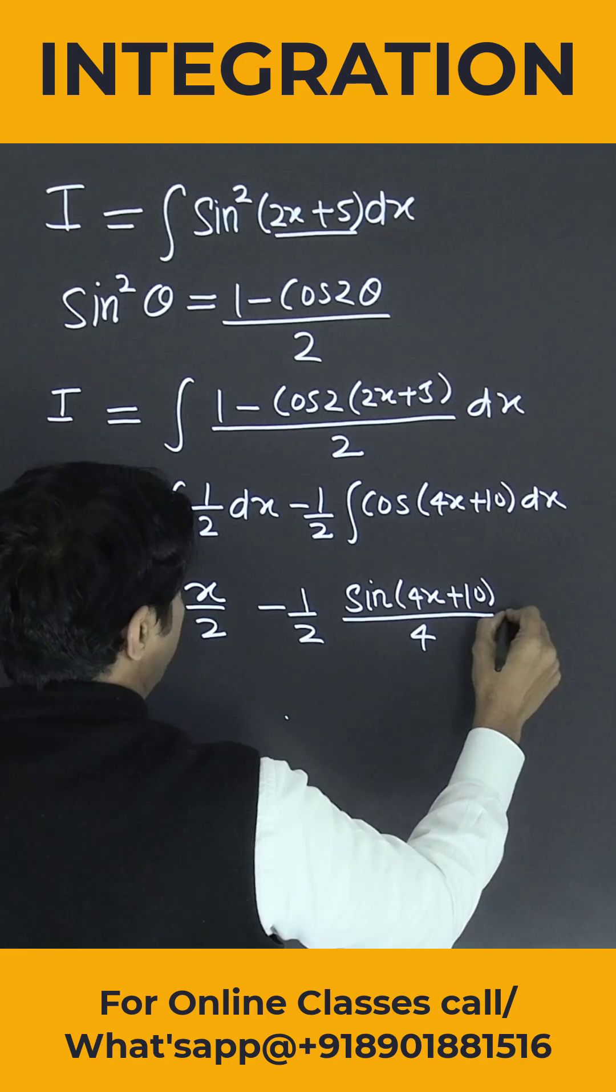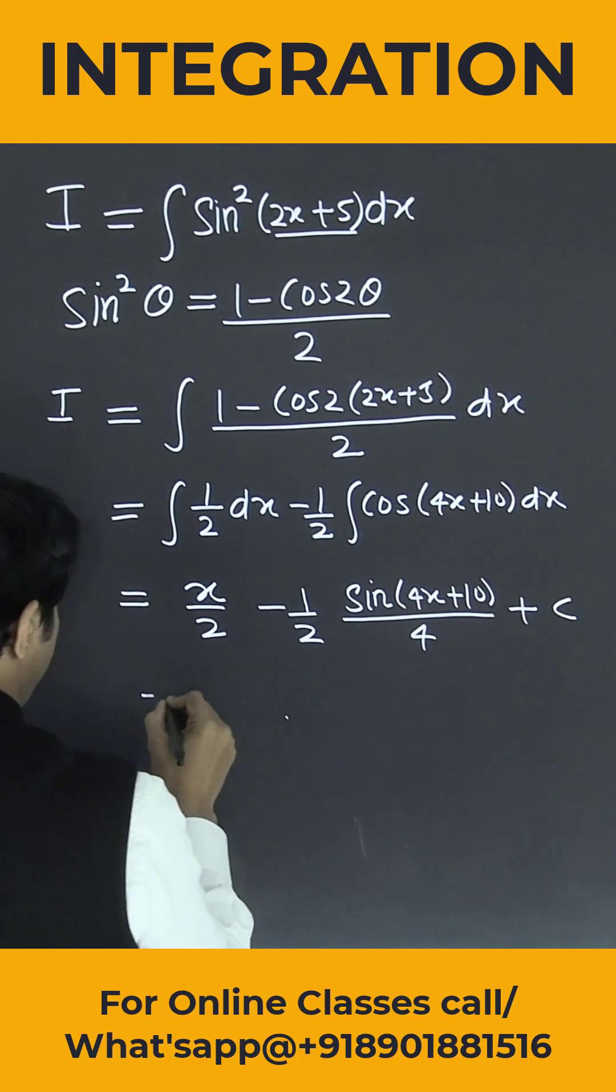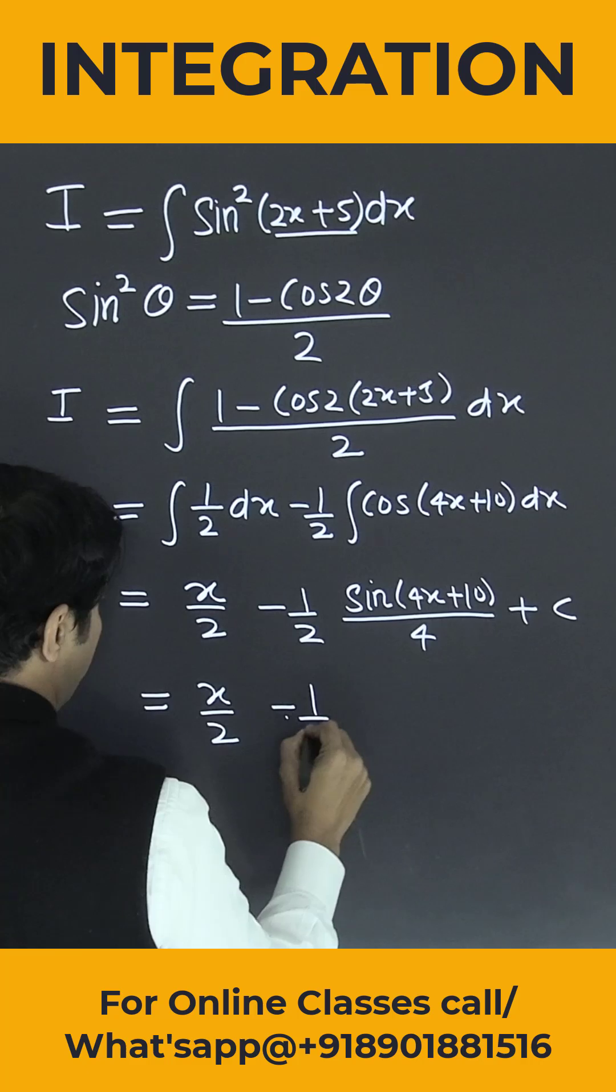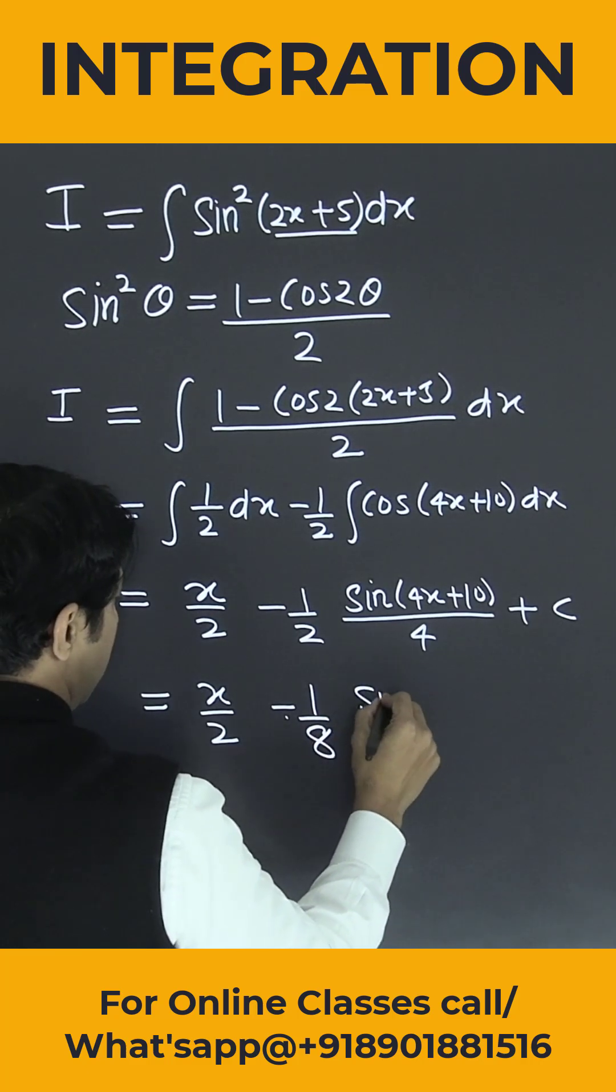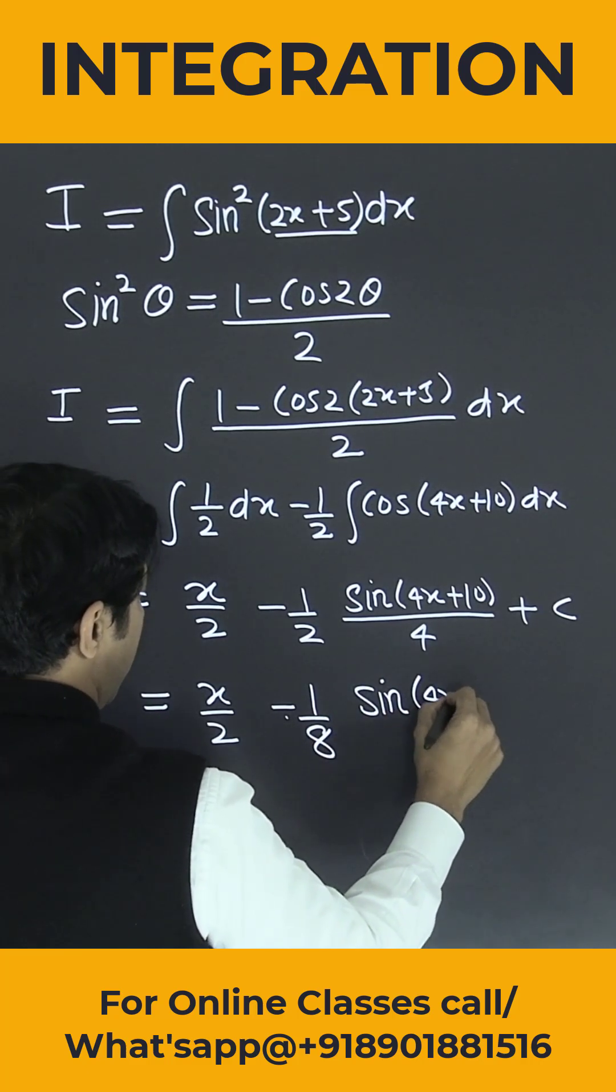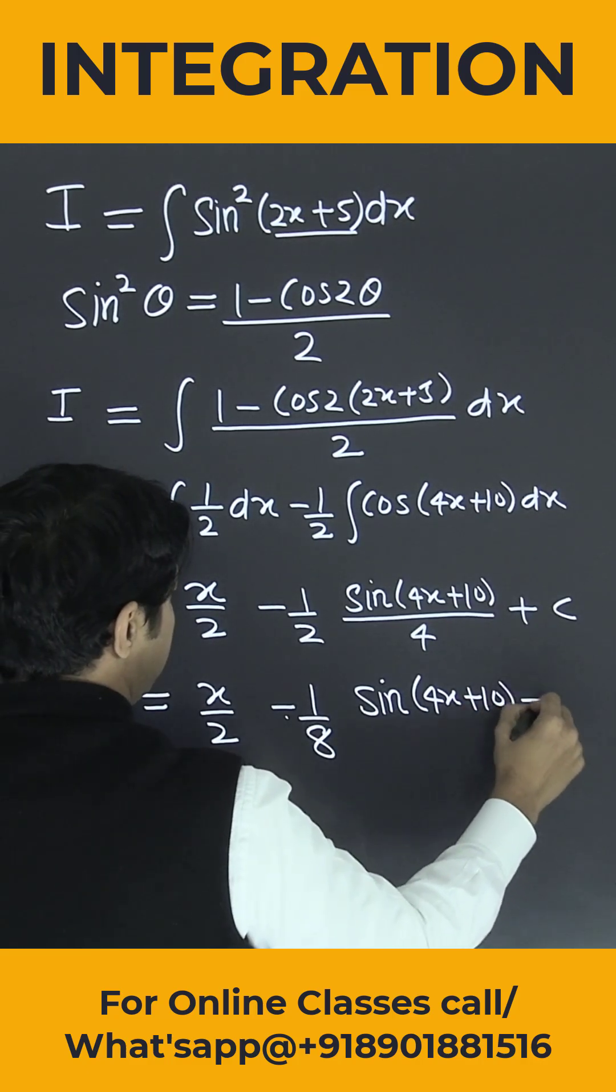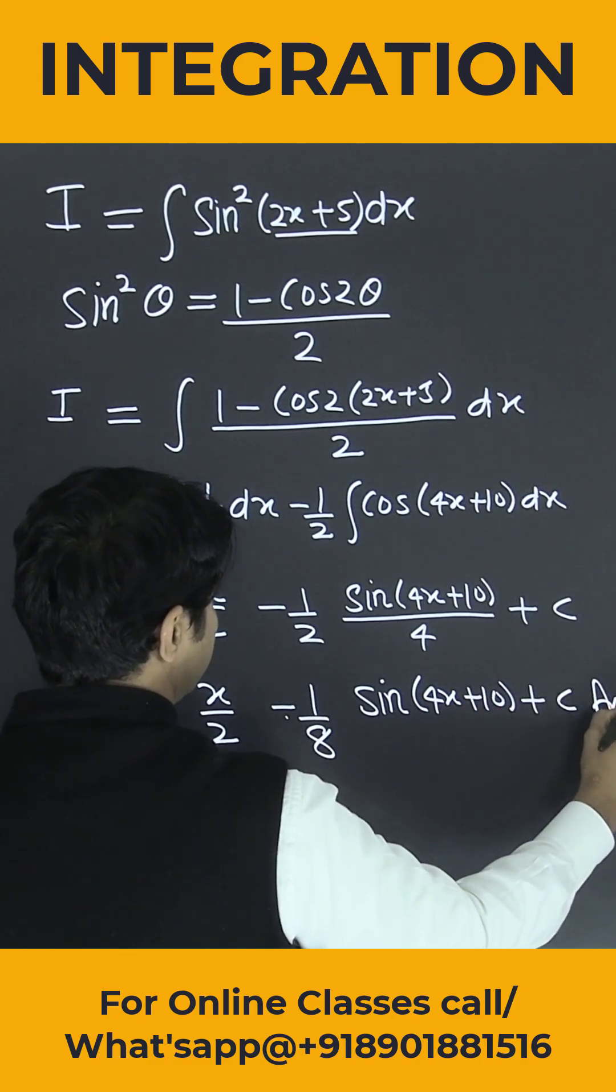Plus c, or you can further write x by 2 minus 1 by 8 sine of 4x plus 10 plus c is the answer. Thank you.